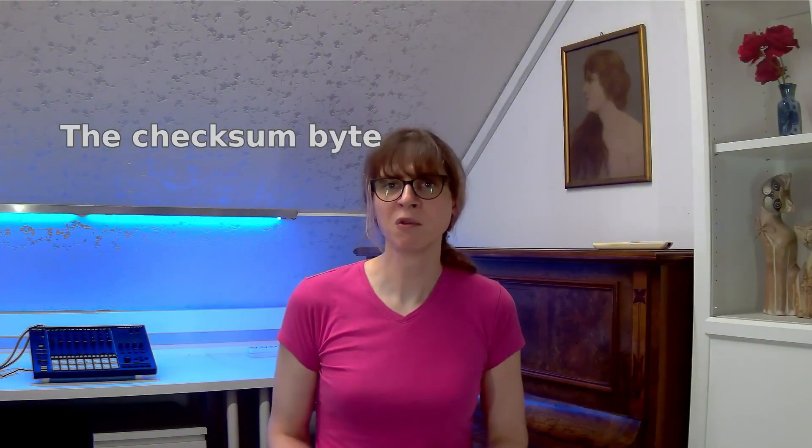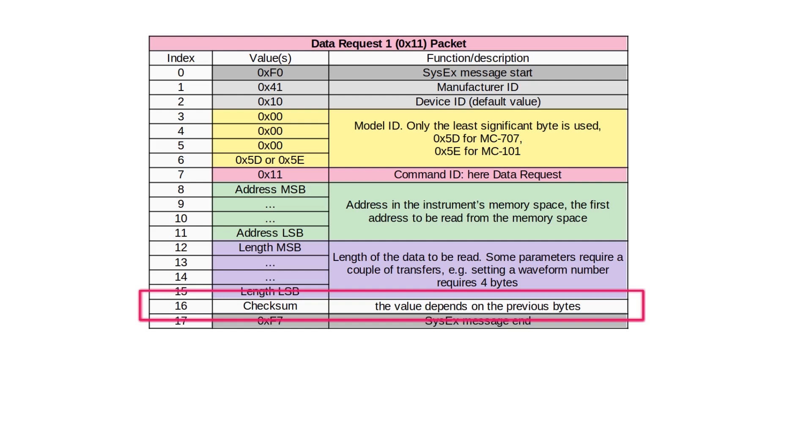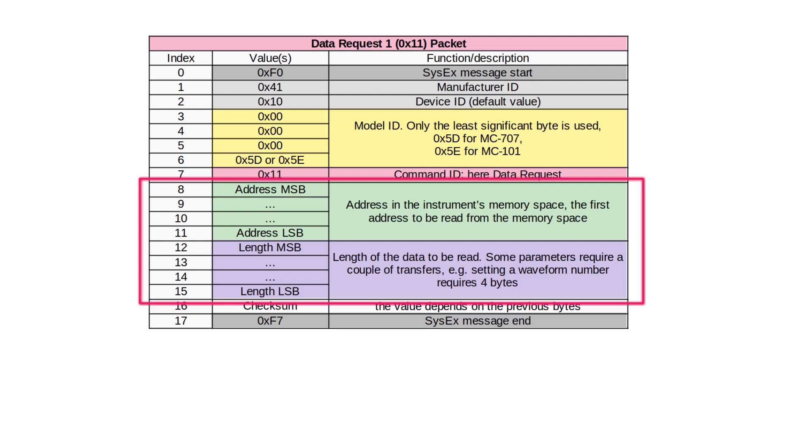Both the request and the data set packets use a checksum byte. This byte contains a number which depends on the values of bytes from index 8 onward up to the checksum. For example we take data from bytes of index 8 to 15 for the request message. The Python code that I used in my experimental script to compute the checksum is shown here. Checksum computing is also described in the MIDI implementation charts of the Roland instruments that support the MIDI-SysX communication.